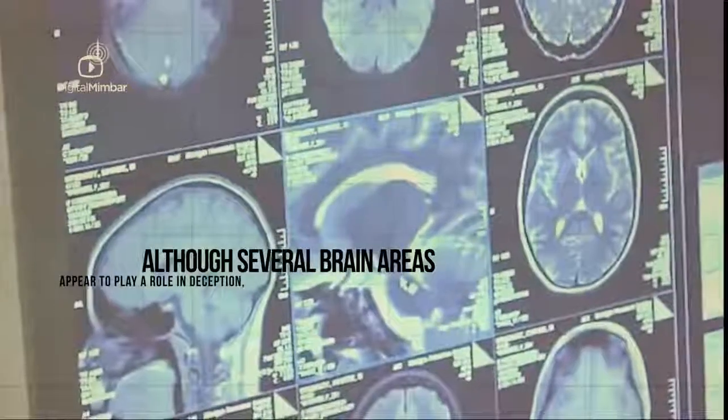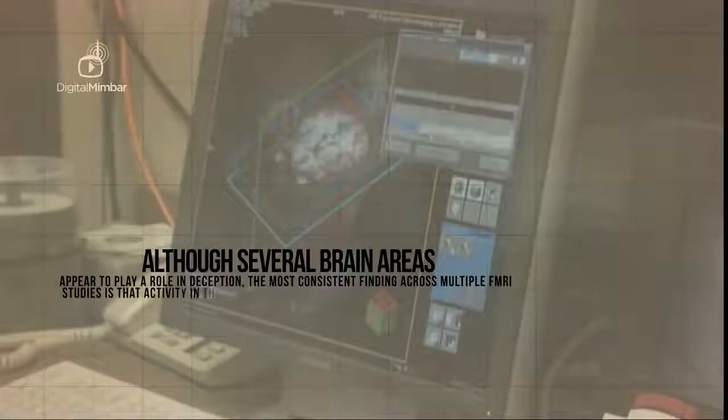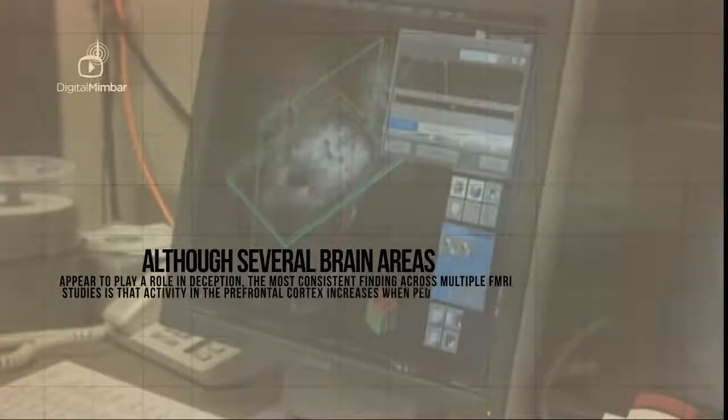Although several brain areas appear to play a role in deception, the most consistent finding across multiple fMRI studies is that activity in the prefrontal cortex increases when people lie.